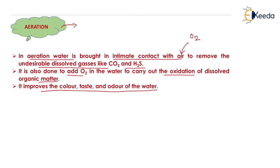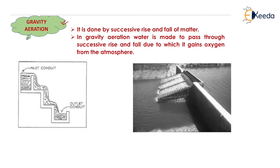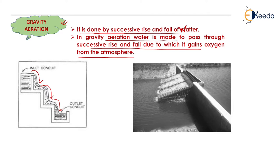We will now see the various methods of aeration. The first is gravity aeration. In gravity aeration, water is made to pass through successive rises and falls, due to which it gains oxygen from the atmosphere. When the water comes from top to bottom due to negative pressure, it absorbs all the atmospheric oxygen. After absorption of oxygen from the atmosphere, the aeration process takes place. This is known as gravity aeration because the water flows under the influence of gravity only.